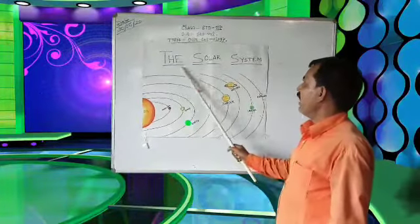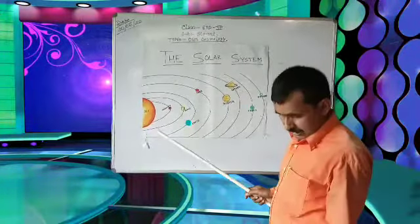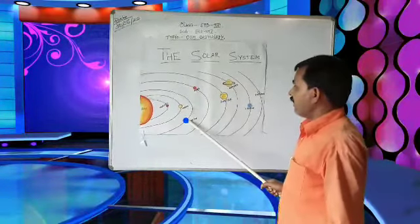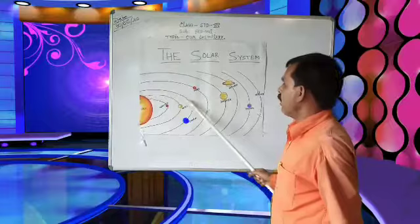This is the solar system. Here we see the Earth. The Earth is the third planet. Three number position Earth.